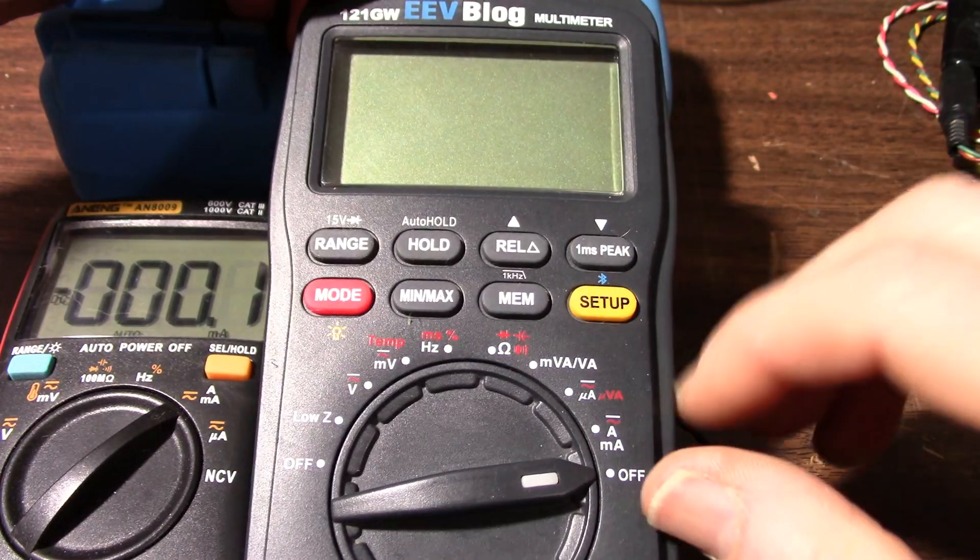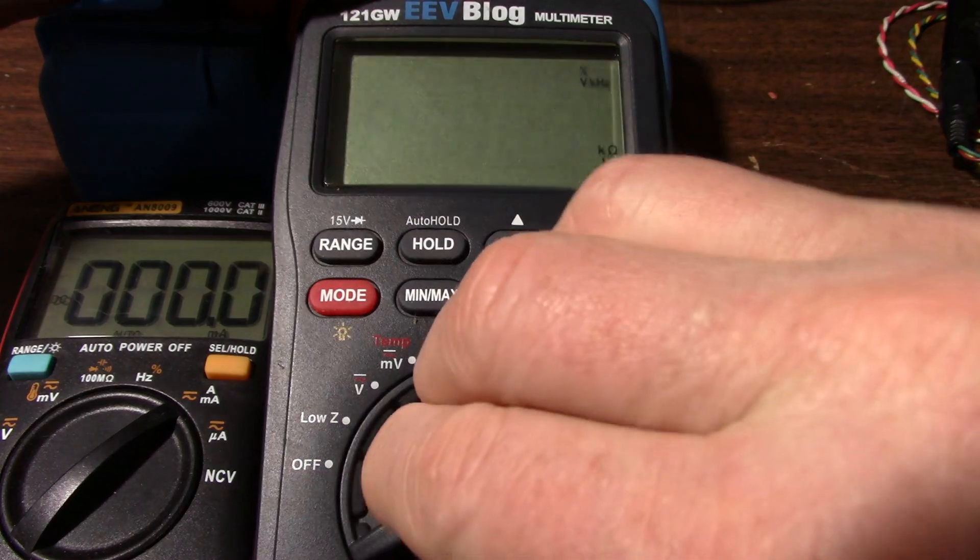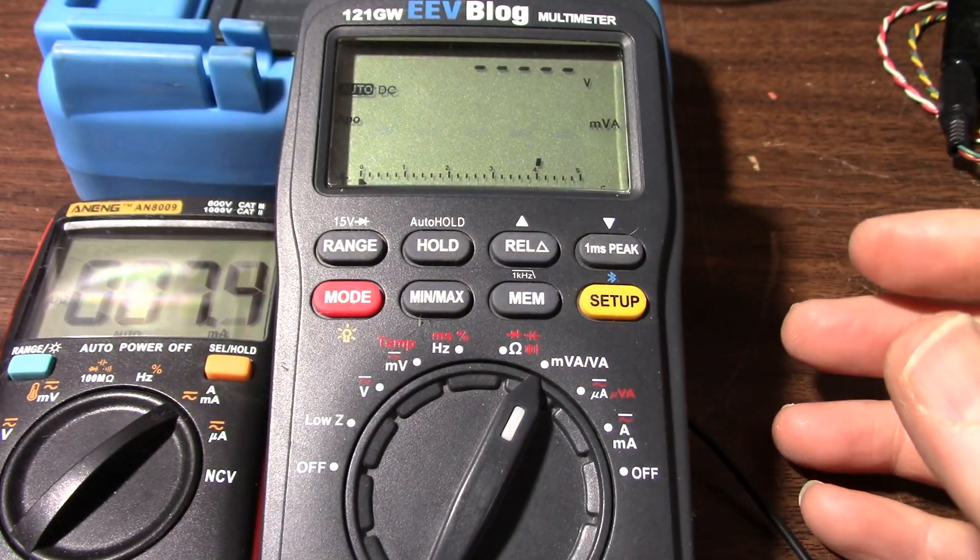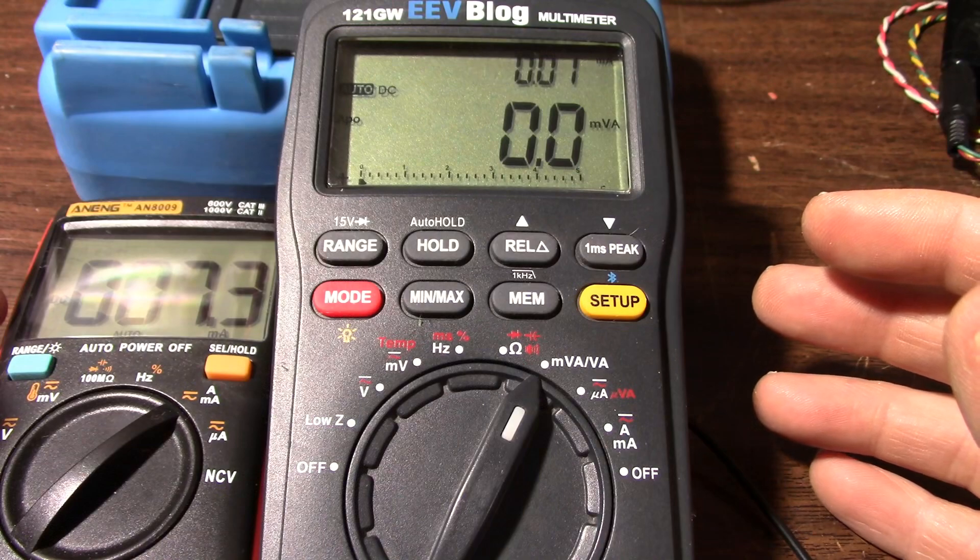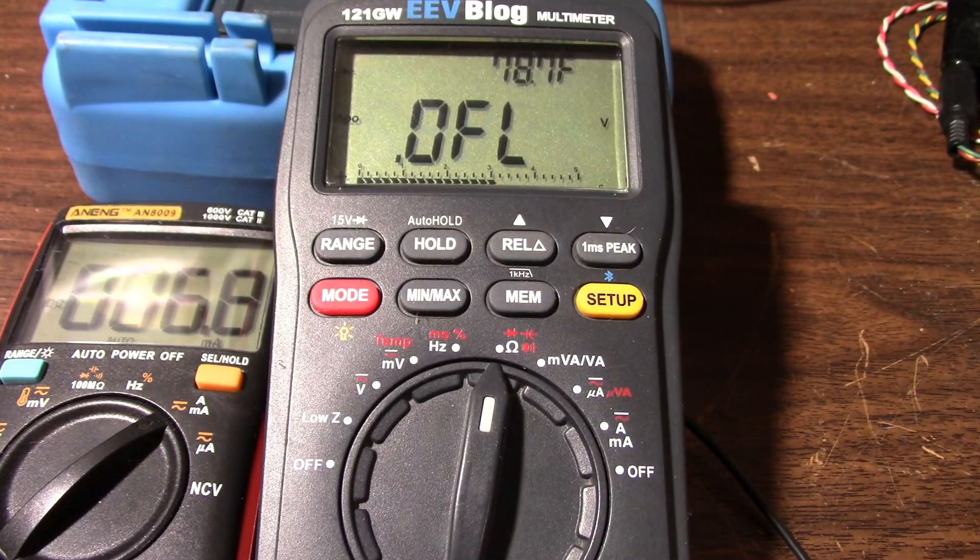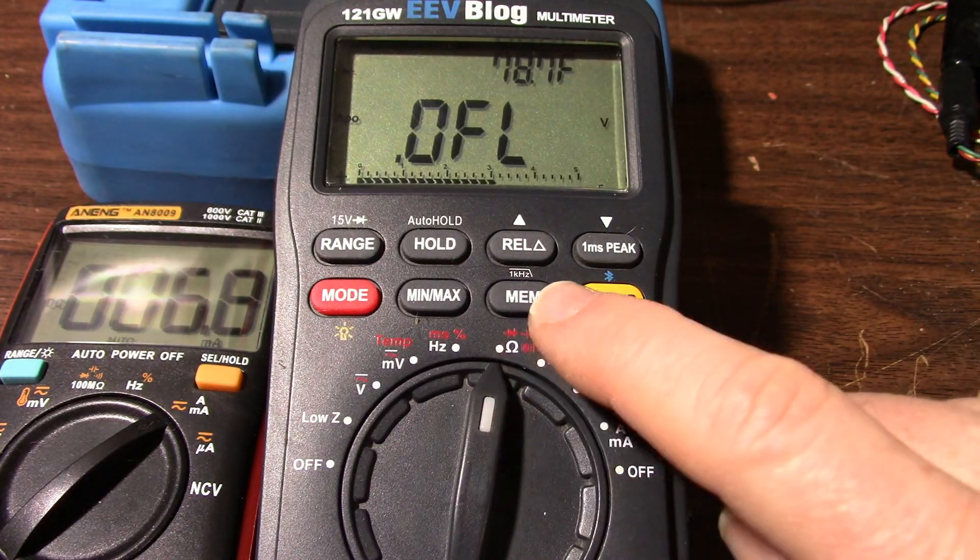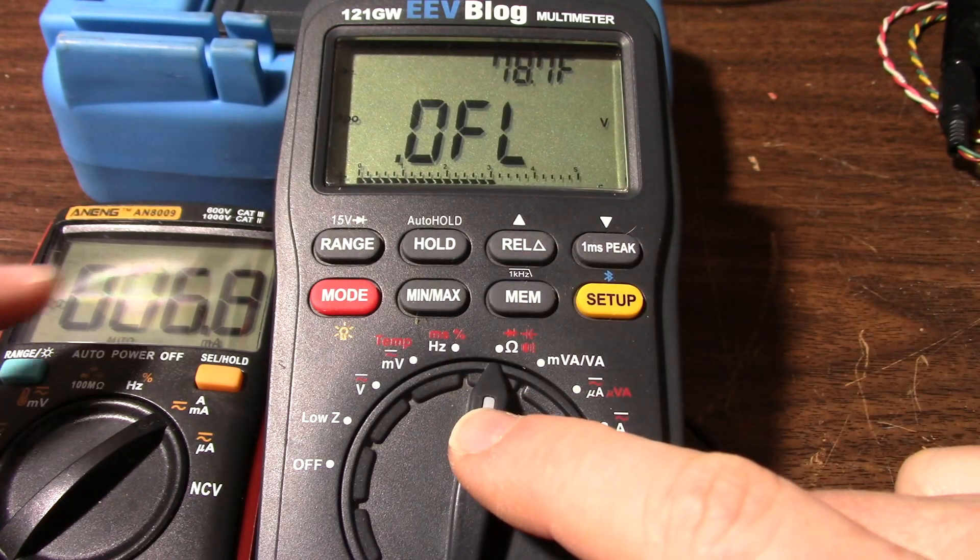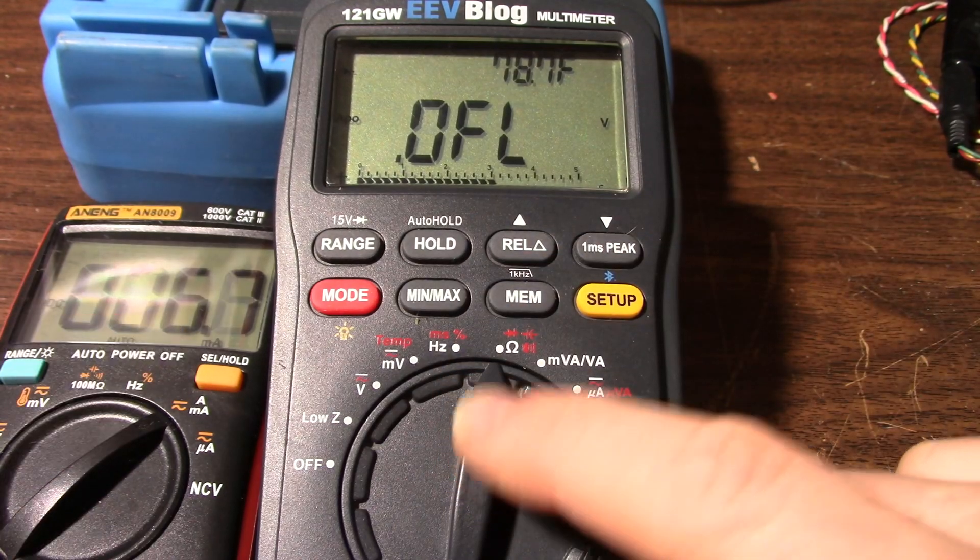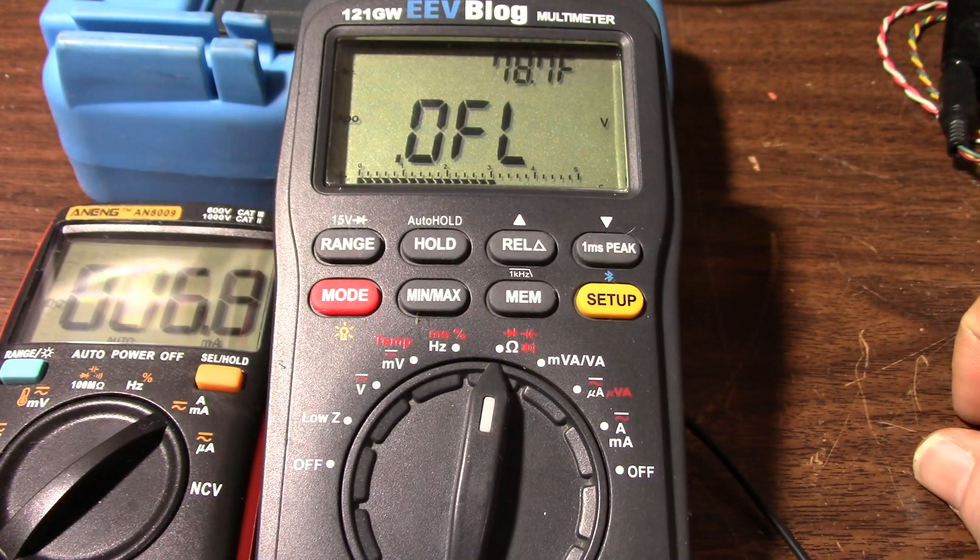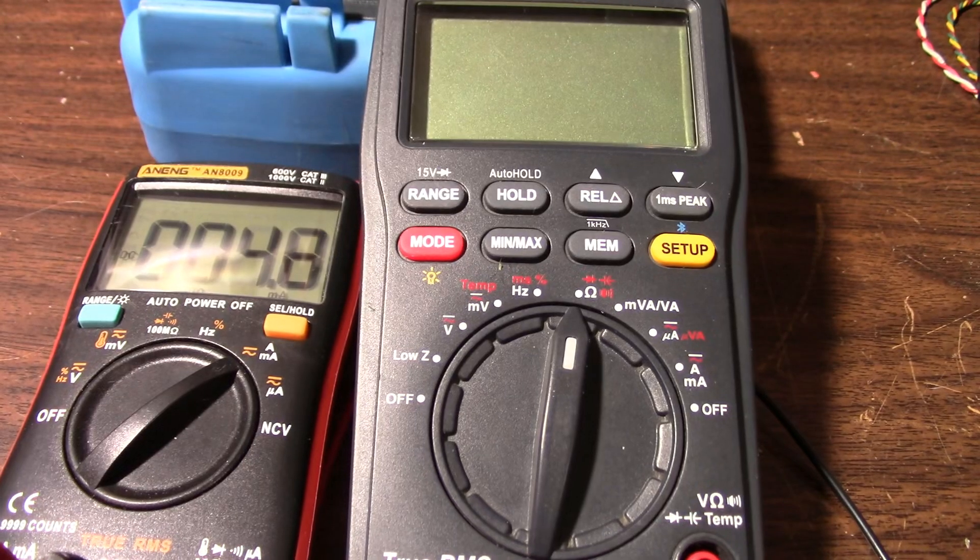Off, of course. So I'll turn it on here. And what I'm going to do is just let it time out. So what I think is going to happen is when it times out and shuts down, there's still going to be a draw that vampires on the battery, draws the batteries down.